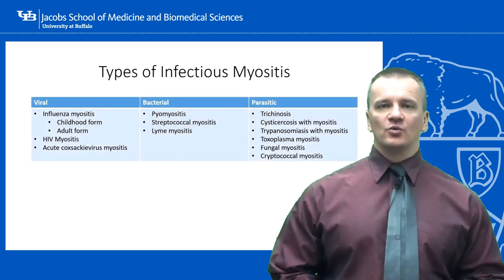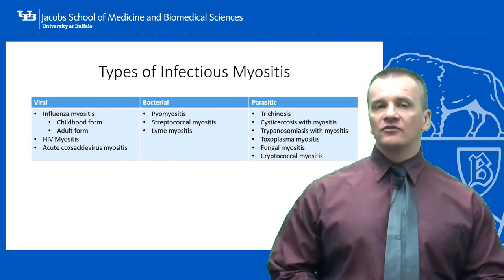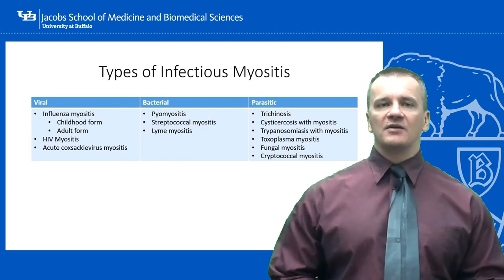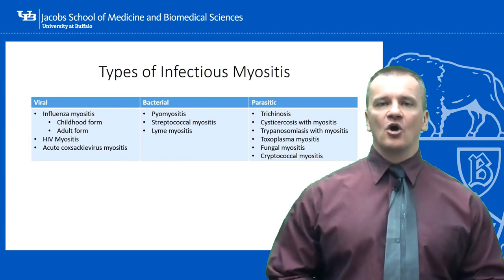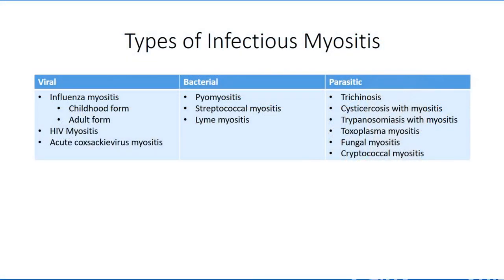Infectious myositis can be acute, occurring as one of the earliest signs of the infection; subacute, occurring at a later time point when compared to other symptoms; or chronic, as an ongoing complication from the infection. Infectious myositis can also be viral, bacterial, or parasitic in nature. The accompanying table provides a partial list of myositis according to infectious agent. For this lecture, we are only going to touch on the three most likely to be encountered in a clinical setting.